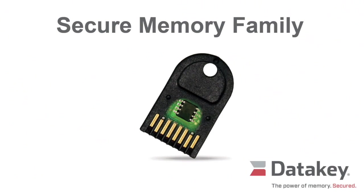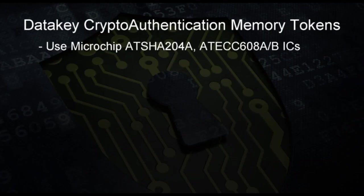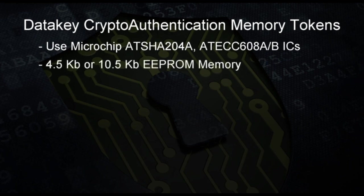The next product family in the DataKey line of portable memory products is the secure memory family. The secure memory family features DataKey crypto authentication memory tokens. These tokens take Microchip's well-known SHA-204 and ECC-608 crypto authentication ICs and make them portable and extremely rugged. DataKey crypto authentication memory tokens are offered in memory capacities of 4.5 kilobits or 10.5 kilobits, with an I2C serial interface and a host of security features.